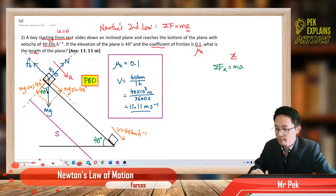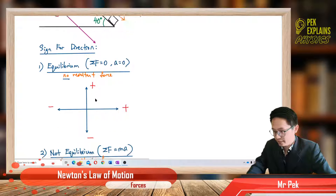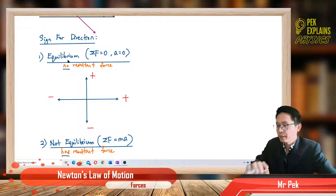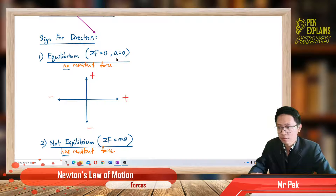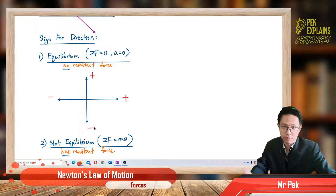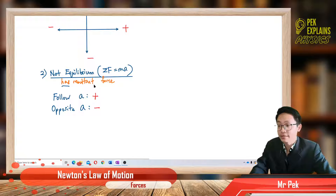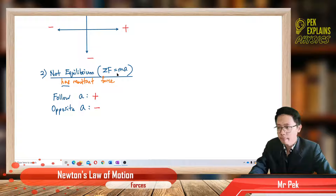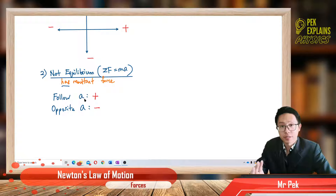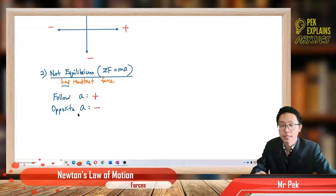Now, an important point about the sign convention for direction. When an object is in equilibrium — meaning no resultant force, total F equals zero, acceleration zero — we use the usual convention: right is positive, left is negative, up is positive, down is negative. But if the object has a resultant force and is not in equilibrium, using Newton's second law (total F = ma), the sign follows the acceleration: forces in the direction of acceleration are positive, forces opposite the acceleration are negative.